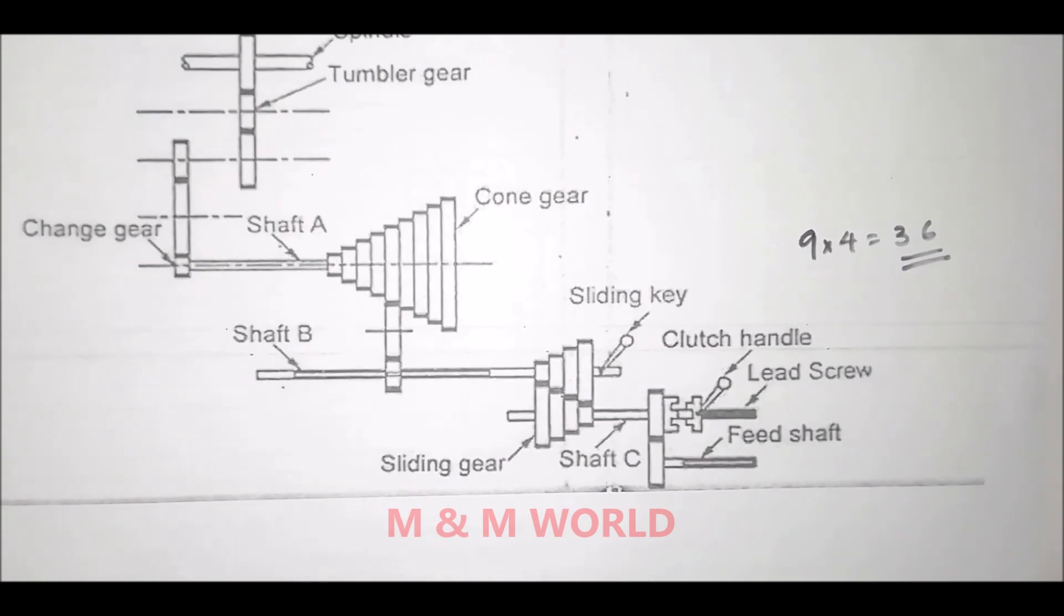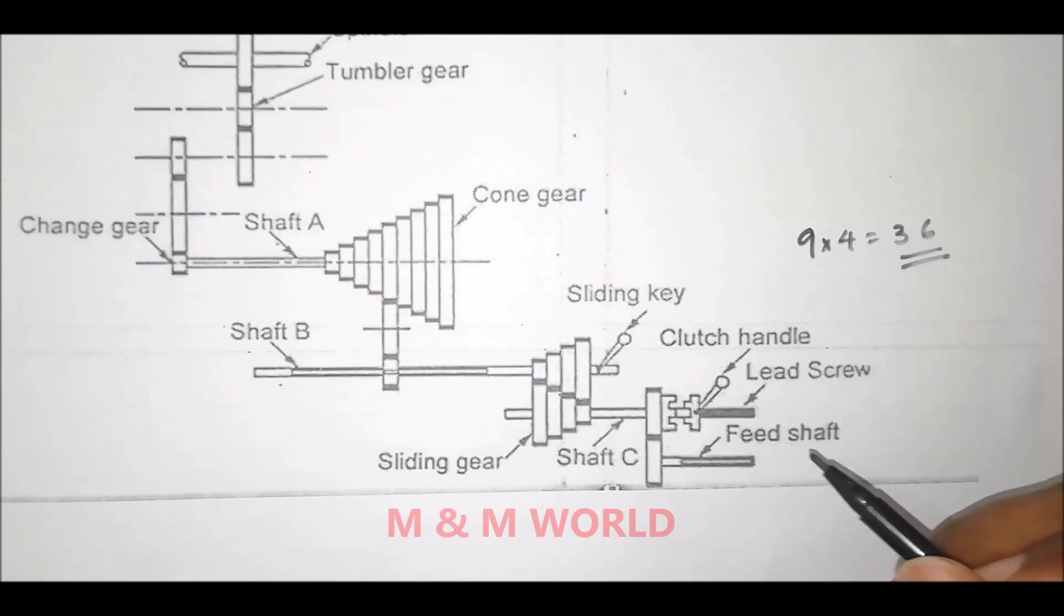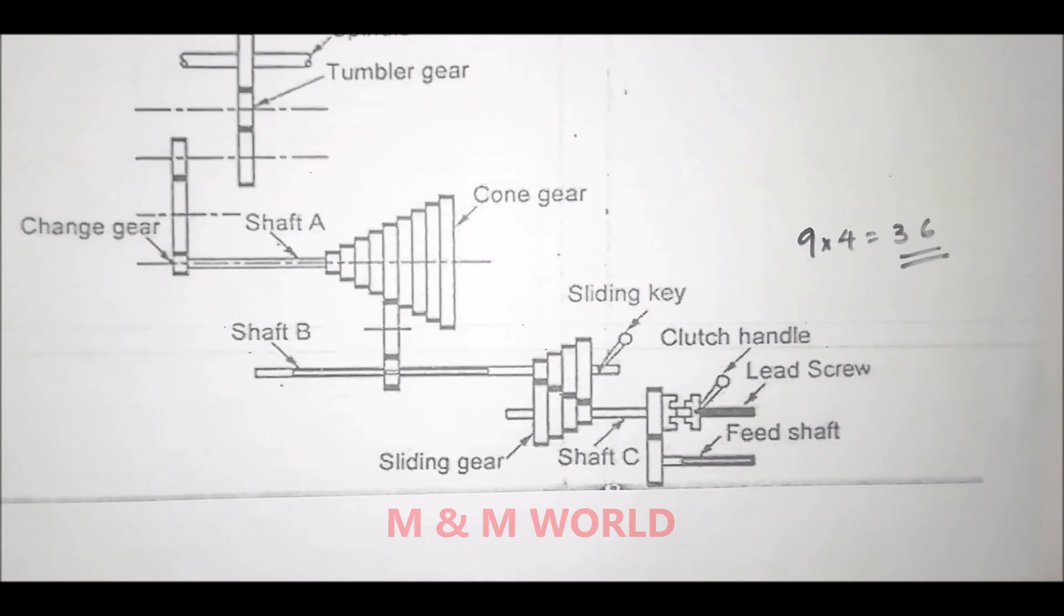The feed rod is a long shaft and it is used to move the carriage or cross slide for turning, facing, and all other operations except thread cutting.